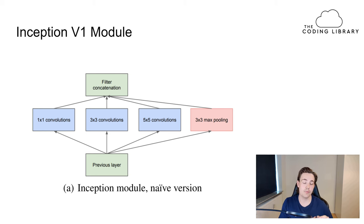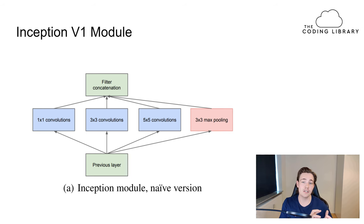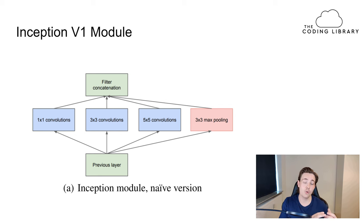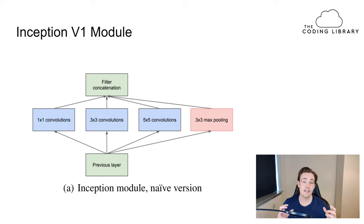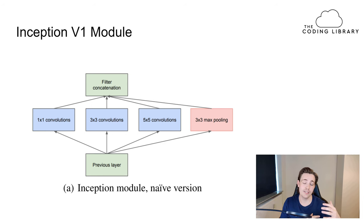Each subsequent Inception module does a number of operations again, going wider each time. We do this because we don't really know what is the best operation or transformation to apply layer by layer. By having multiple operations per layer, we can extract the most useful information from our images at each layer. By having these different transformations that we concatenate, we're effectively choosing the best one as we stack these Inception modules on top of each other.